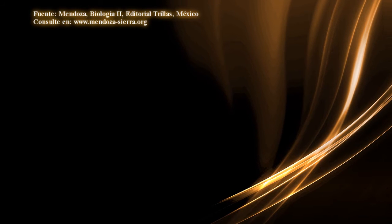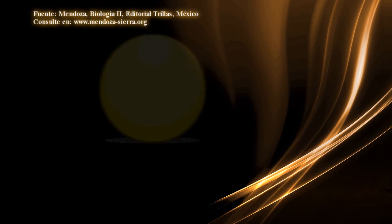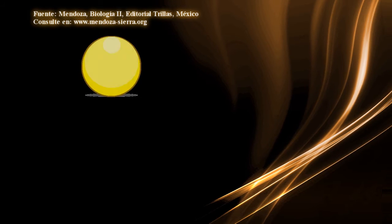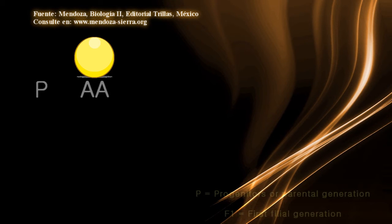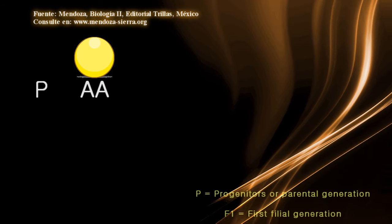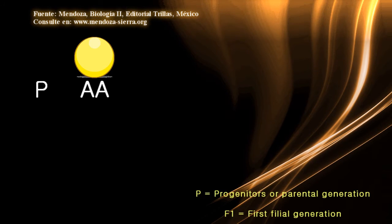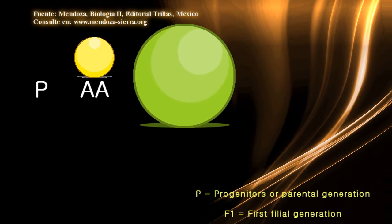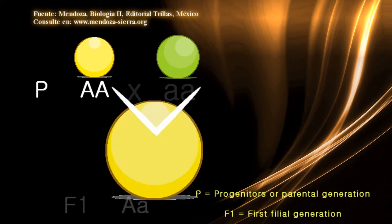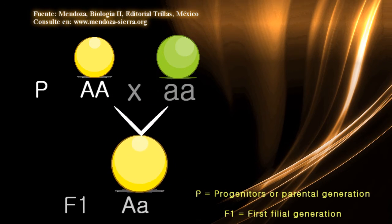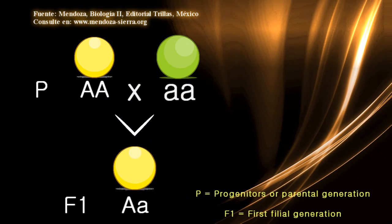The characteristics of dominant genes appear whenever an individual is carrying a dominant gene. For example, in the case of peas, the yellow seed is dominant. Therefore, if the genotype of a pea plant is uppercase A, uppercase A, the pea seed will be yellow. If the genotype is uppercase A, lowercase a, the seed will also be yellow because the dominant gene uppercase A is present.